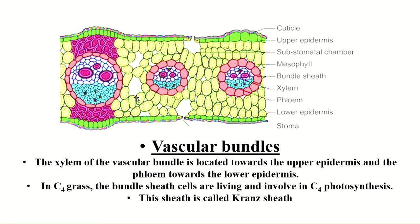The xylem of the vascular bundle is located towards the upper epidermis. Here you can find two metaxylem and one protoxylem directed towards the upper epidermis, and the phloem faces towards the lower epidermis. In C4 grasses, the bundle sheaths are living cells involved in the C4 photosynthesis cycle, and that sheath is called the Kranz sheath.